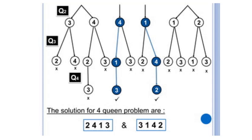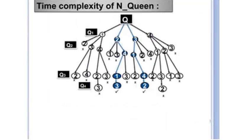By this method we find the two solutions to the 4-queen problem: 2-4-1-3 and 3-1-4-2. This is the time complexity approach to the N-queen problem. Thank you for the opportunity and for spending your time watching this.